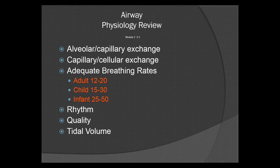Adequate breathing rates for the adult are 12 to 20 breaths per minute. For the child, it's 15 to 30. And for an infant, it's 25 to 50 breaths per minute. Remember the different rhythms: Kussmaul, Cheyne-Stokes, Ataxic or Biot's respirations. These are very important things to remember when you're looking at the airway.